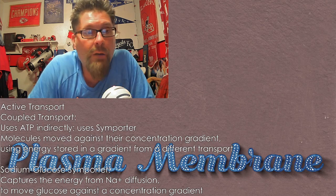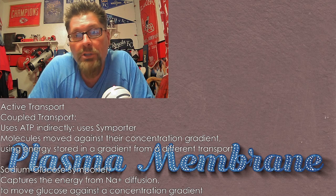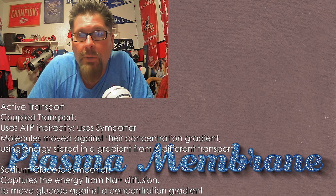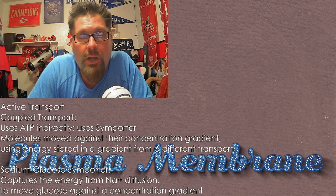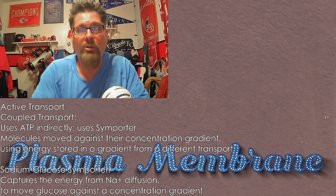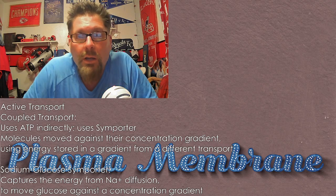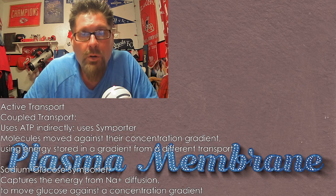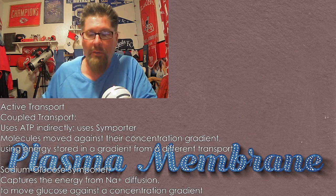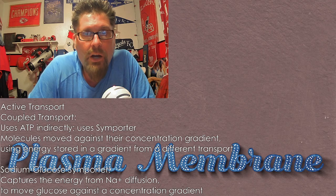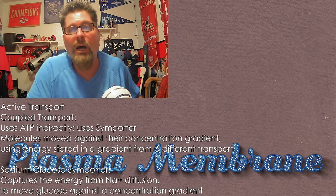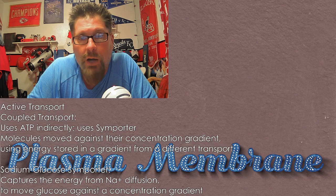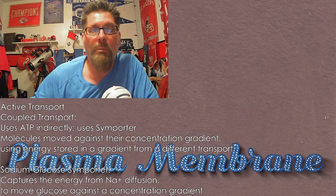The process we just described — primary and secondary transport — is called coupled transport. It's called coupled because a coupler is something that connects two things. These two transports, even though they're different, are connected by the energy use. The primary transport had to use an ATP molecule, which released a large amount of energy, and the secondary transport uses the excess of that energy so as not to waste it — just like the $100 bill example. The idea is to not waste that situation. Coupled transport.